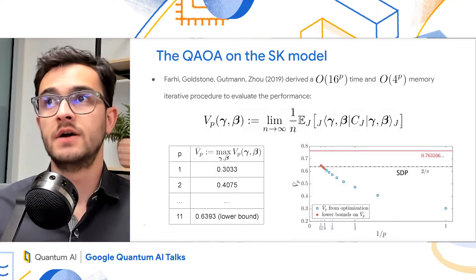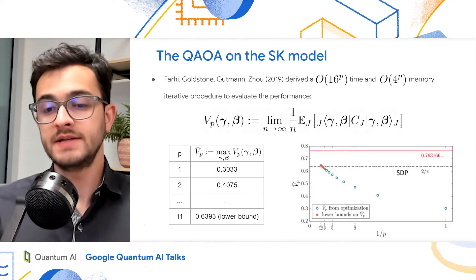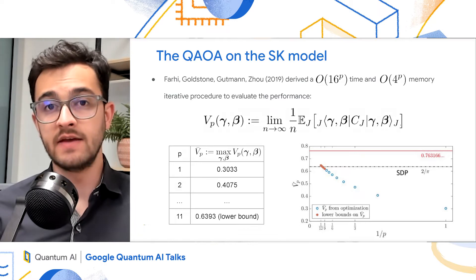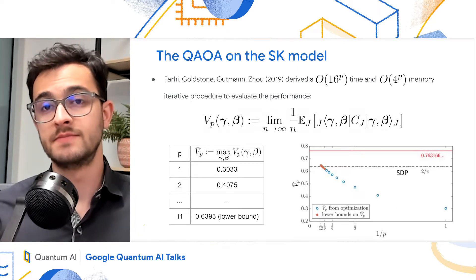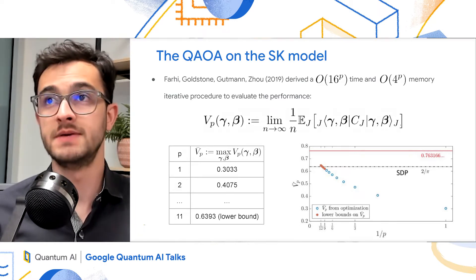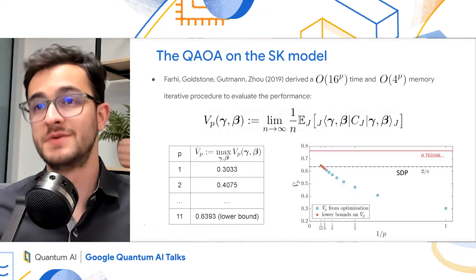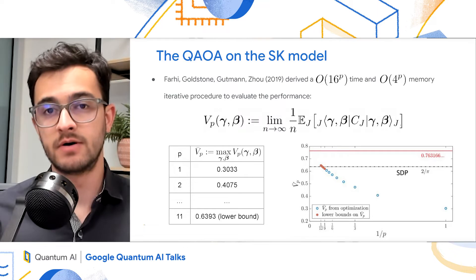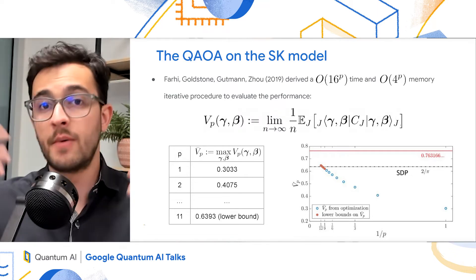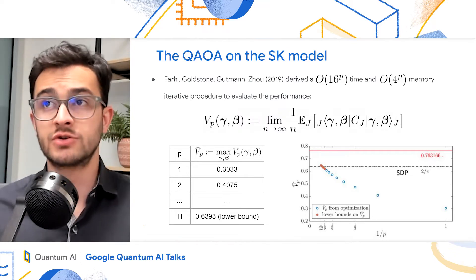So in 2019, those authors applied the QAOA to the SK model, and they gave an iteration with time 16 to the p and memory 4 to the p, that outputs what here I'm calling v_p, which is the performance of the QAOA on the SK model. When I put a bar, that means I'm optimizing over the gammas and the betas.